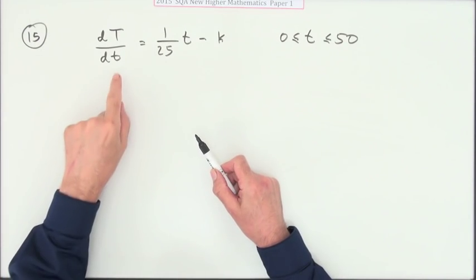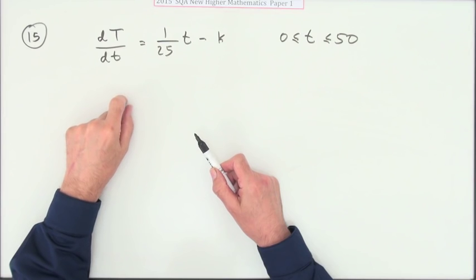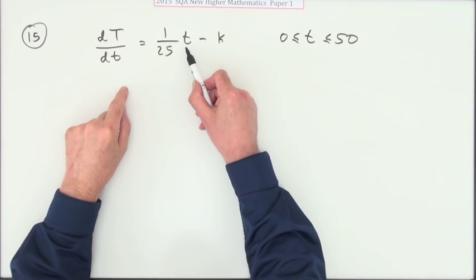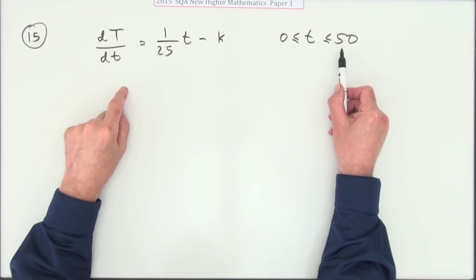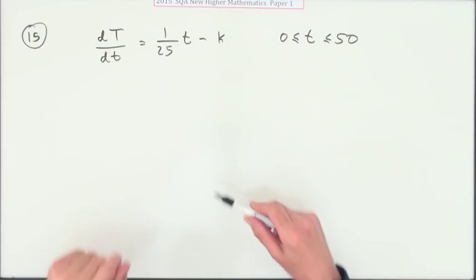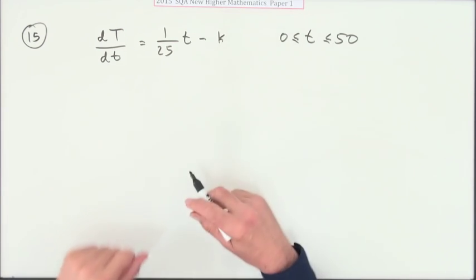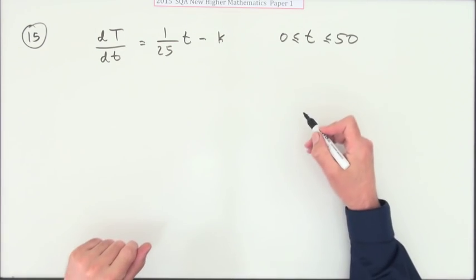It represents the temperature of a mug of coffee. T is the time in minutes, and t goes between zero and 50. So you've been waiting 50 minutes just staring at this cup of coffee just to observe how it cools down.